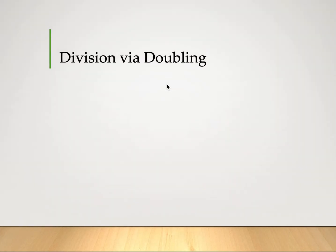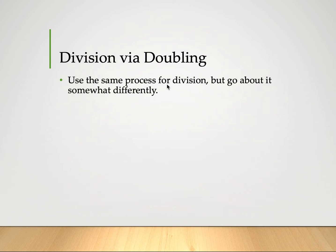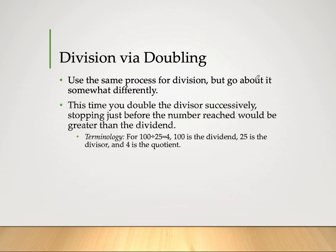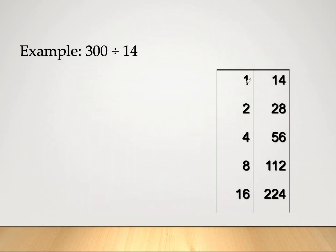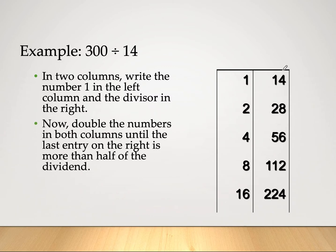Now let's look at division by doubling. We use the same process but go about it somewhat differently. This time we double the divisor successively, stopping just before the result would exceed the dividend. As a reminder: in 100 divided by 25 equals 4, the 100 is the dividend, 25 is the divisor, and 4 is the quotient. For our example, 300 divided by 14, we write 1 on the left and the divisor 14 on the right. We double both columns until the last entry on the right is more than half of the dividend. Half of 300 is 150, and 224 exceeds 150, so we stop there.